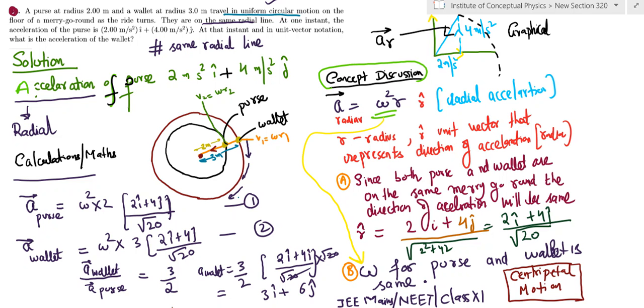Good morning and welcome to this video on uniform circular motion. This video is based on a question which is a bit tricky. There are two objects involved: one is a purse and the other is a wallet.